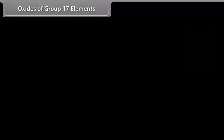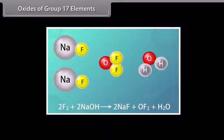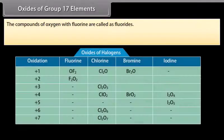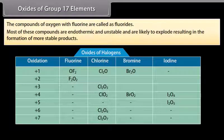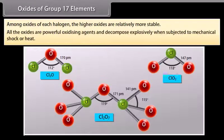Oxides of Group 17 elements: Halogens do not combine with oxygen directly. For example, oxygen difluoride (OF₂) is prepared by the action of fluorine on 2% sodium hydroxide solution. The compounds of oxygen with fluorine are called fluorides because fluorine is more electronegative than oxygen. Most of these compounds are endothermic and unstable, and are likely to explode to form more stable products. Among oxides of each halogen, the higher oxides are relatively more stable. All oxides are powerful oxidizing agents and decompose explosively when subjected to mechanical shock or heat.